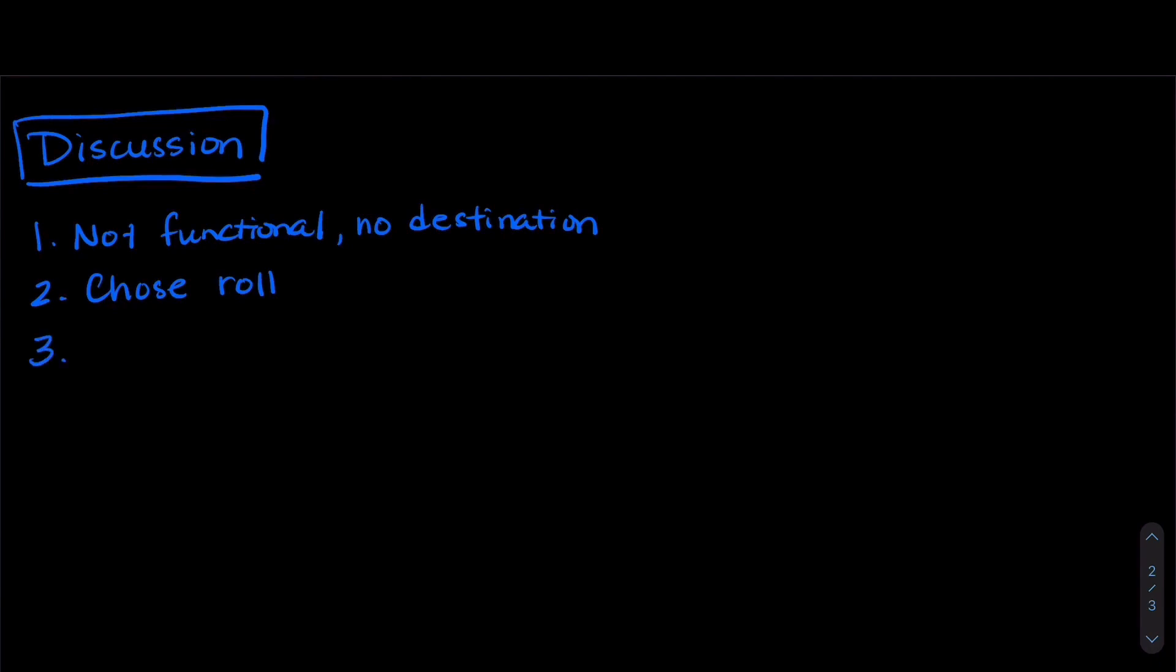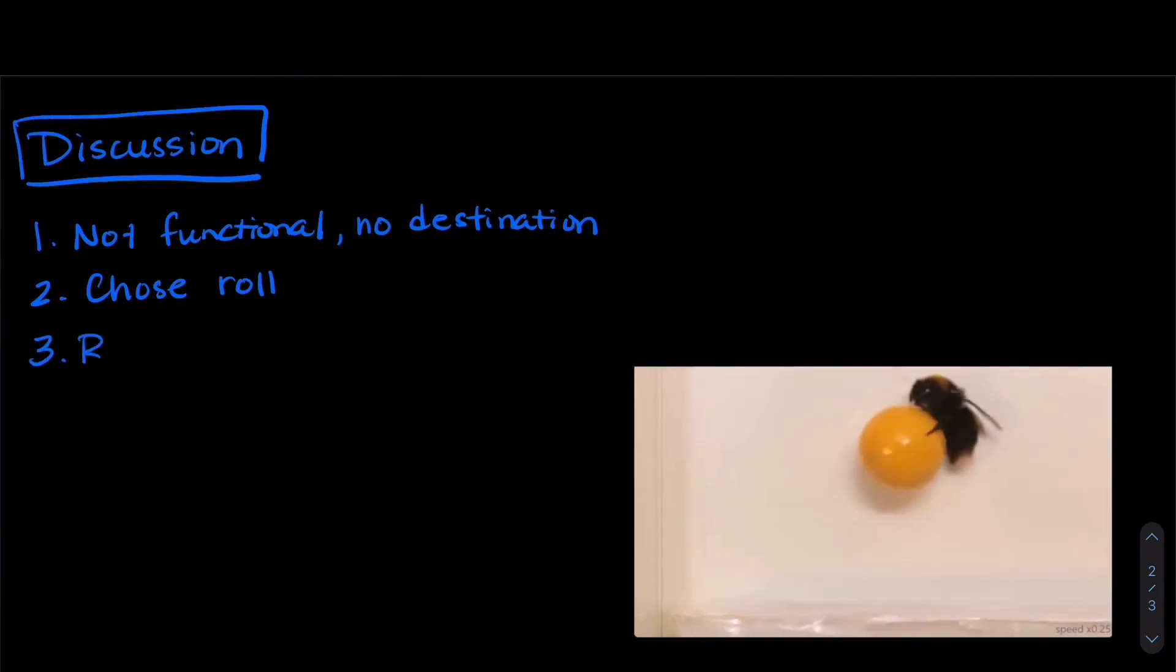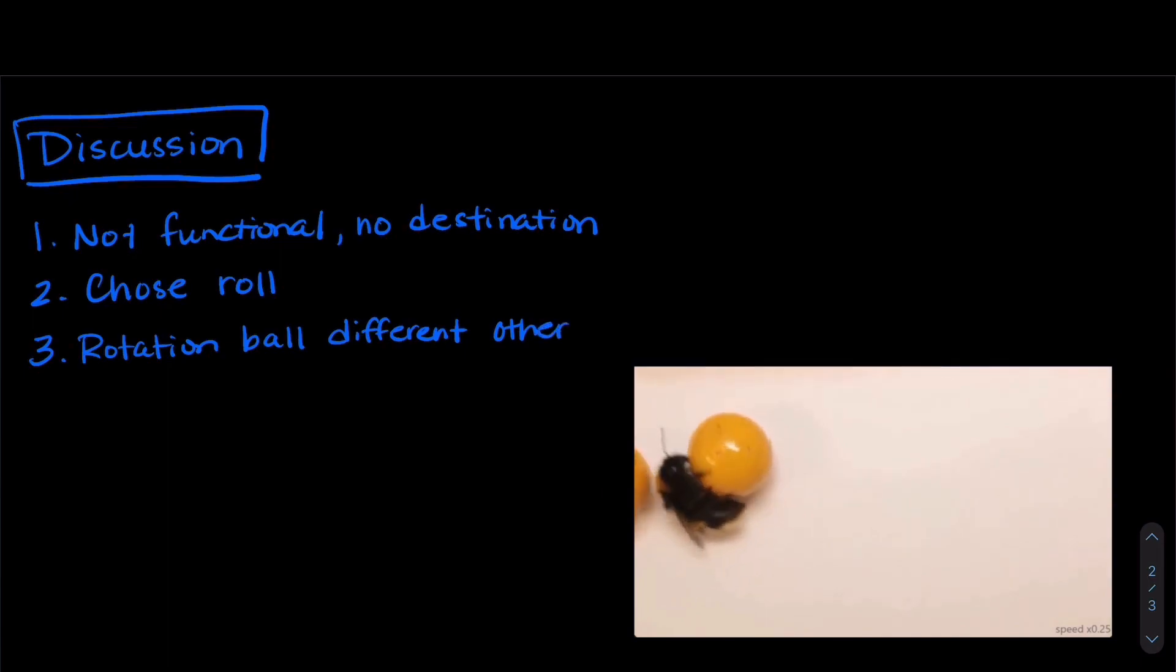And onto that third rule of play, the rotation of the ball as it rolls is different than other movements that the bee would normally do. So a bee going to pollinate a flower, that does not track onto the rotation of rolling a ball.